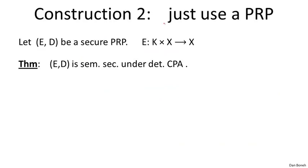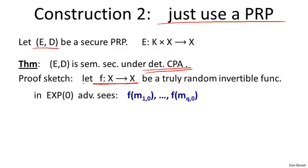The second construction is actually trivial: we're going to use a PRP directly. If E, D is a secure PRP where E encrypts and D decrypts, then using E directly already gives us deterministic CPA security. Suppose F is a truly random invertible function from X to X — our PRP is indistinguishable from such a function. In experiment zero, the attacker submits distinct messages and sees the evaluation of F on those distinct messages, which gives him Q distinct random values in X.